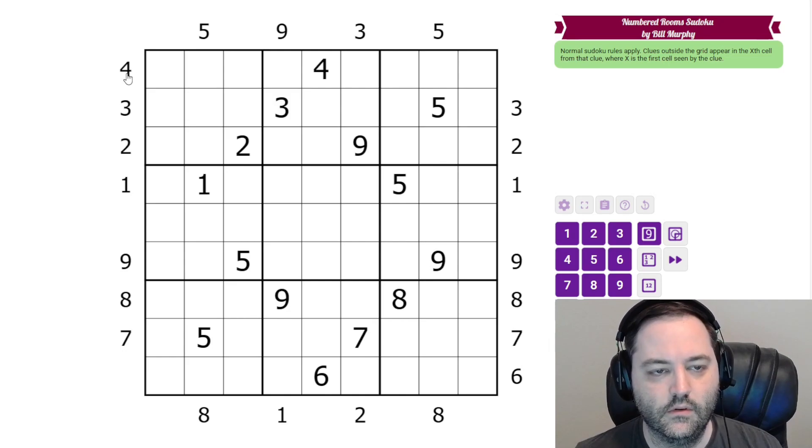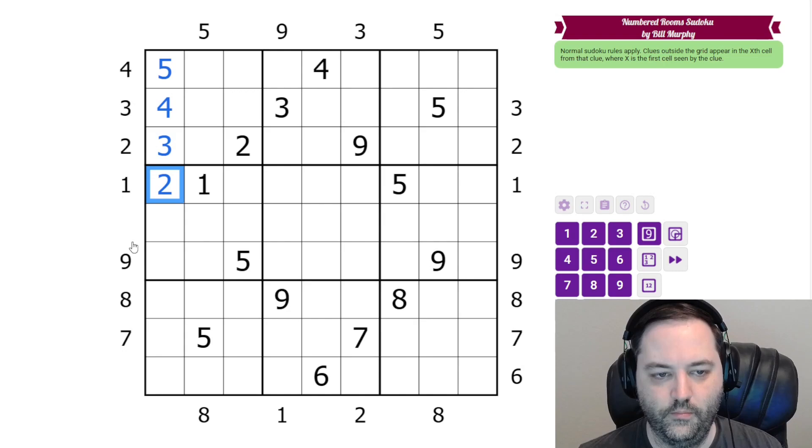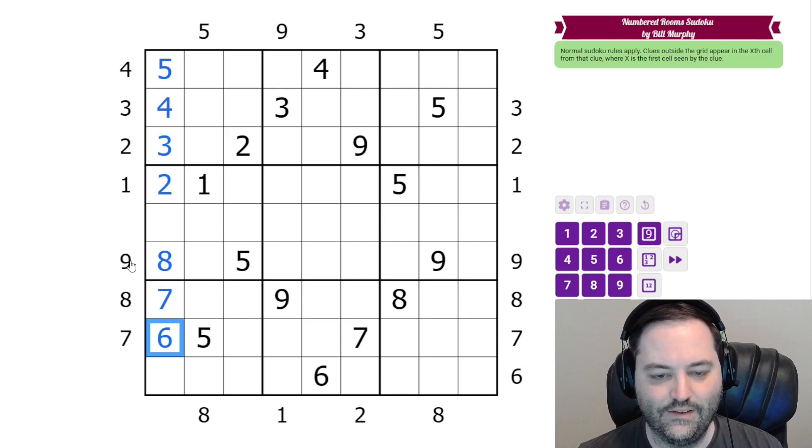This clue in row 1 is a 4. We have a given 4 in the row, and we can see it's in the fifth cell, so the first digit in this row has to be a 5. The 3 in row 2 is in the fourth cell, so this is a 4. The 2 is in the third cell, so this is a 3. The 1 is in the second cell, so this is a 2. The 9 here is in the 8th cell from this direction. The 8 is in the 7th cell, and the 7 is in the 6th cell.